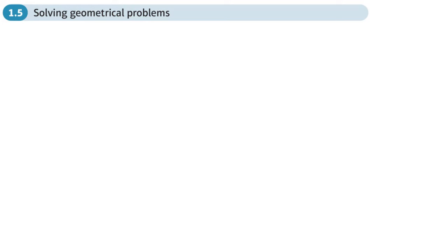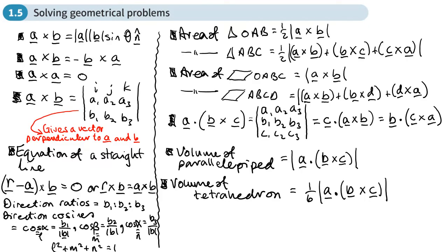This is the fifth and final section of the Vectors chapter: Solving Geometrical Problems. This brings together all the different things we've learned about vectors, cross product, and the scalar triple product, and uses those to help us solve problems. One thing particularly useful is that when we find a cross product of two vectors, it gives you a vector which is perpendicular to both — useful for finding normals and equations of a line or a plane.